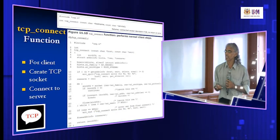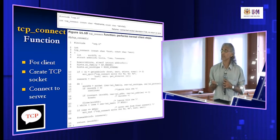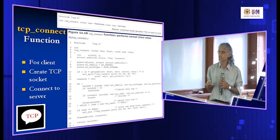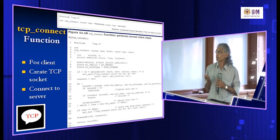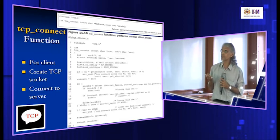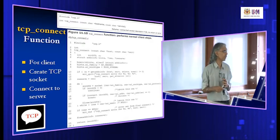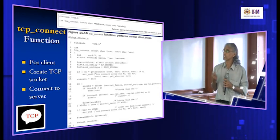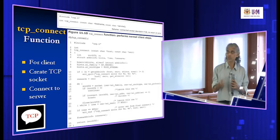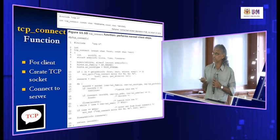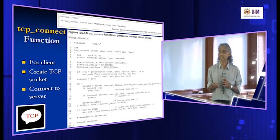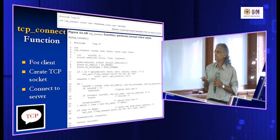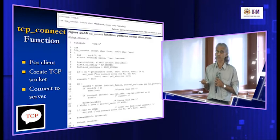On the client side, we create a new function called TCP connect, which creates a TCP socket and connects to the server — doing two jobs in one function. TCP connect requires two parameters: the host name and the service name. It calls getAddressInfo to convert the host name into IP address and the service name into a port number. In this case we do not specify the family type, so it can be both IPv4 or IPv6, and we specify TCP protocol with socket type of SOCK_STREAM. These are our hints.